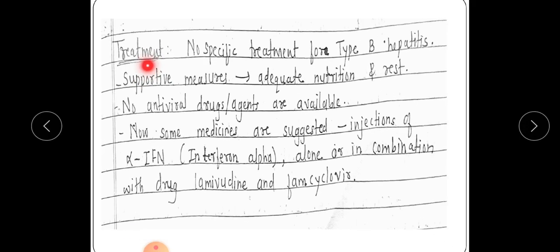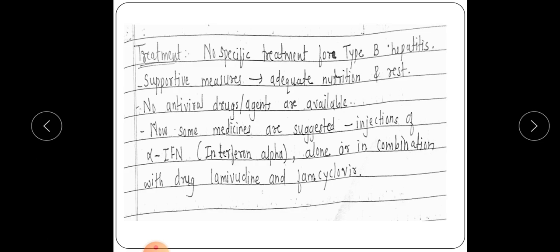For treatment of Hepatitis B, there is no specific treatment available. Supportive measures include adequate nutrition and rest, similar to Hepatitis A. No specific antiviral drug is available, but some medicines are suggested: injections of interferon alpha, alone or in combination with the drugs lamivudine and famciclovir. This concludes the lecture on Hepatitis B virus.